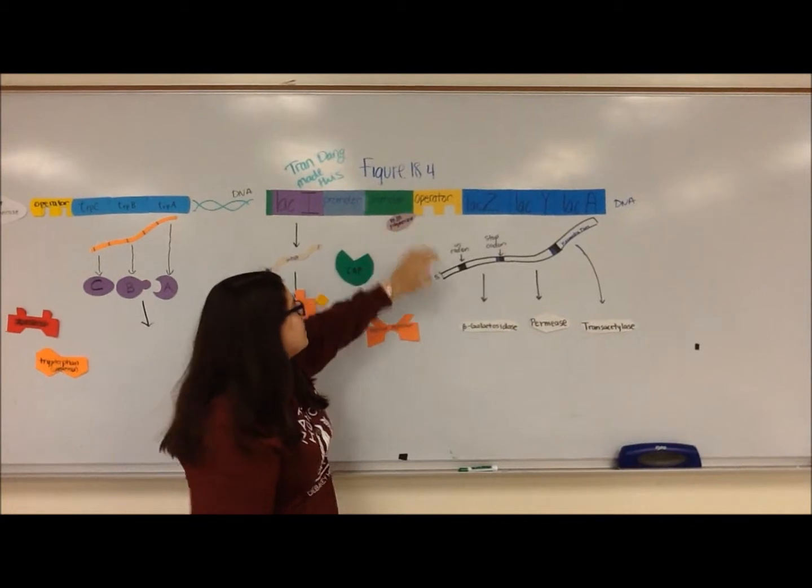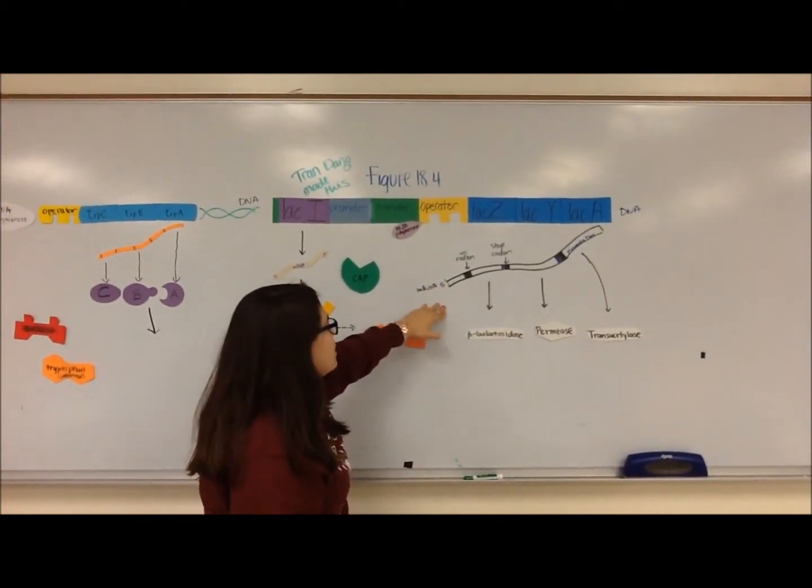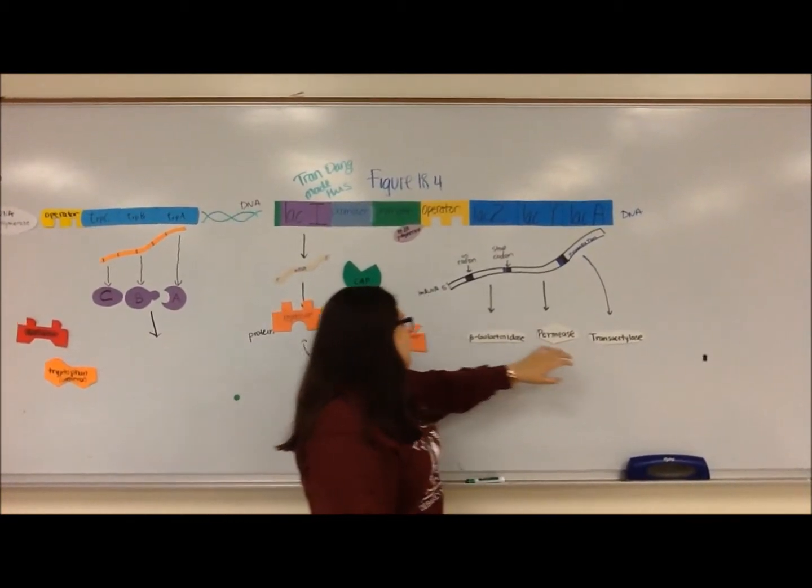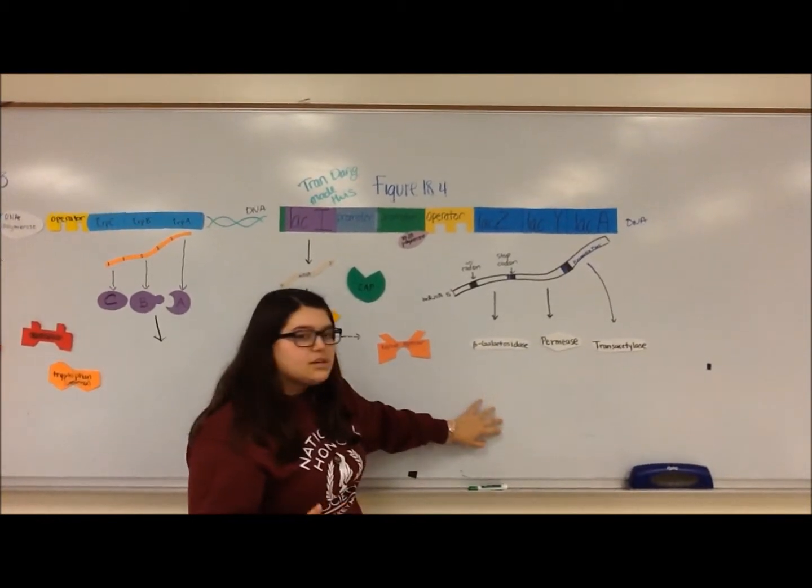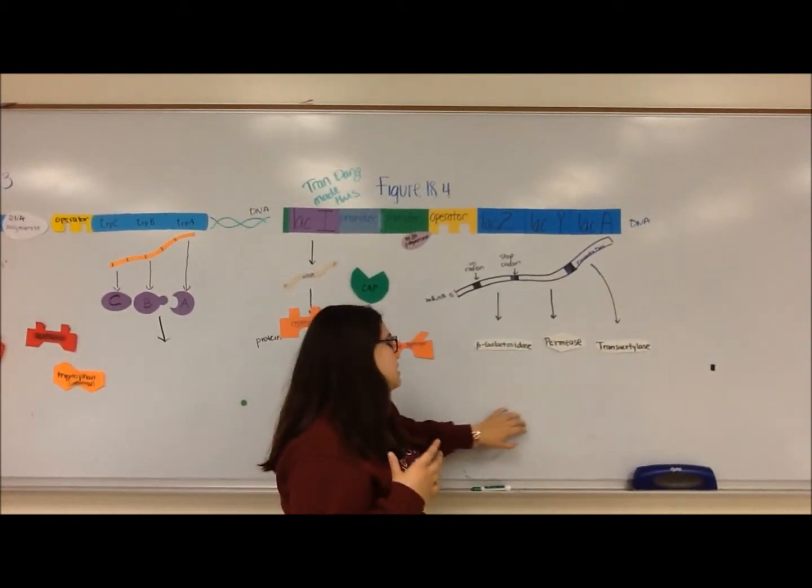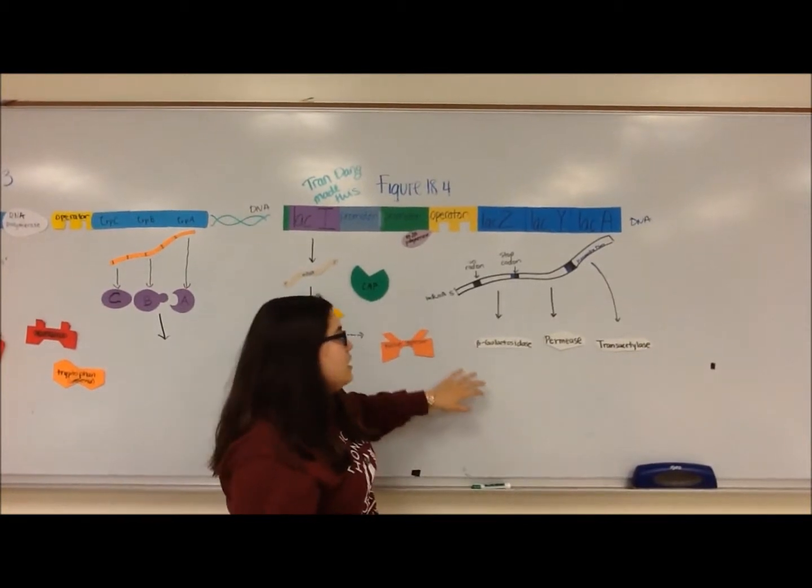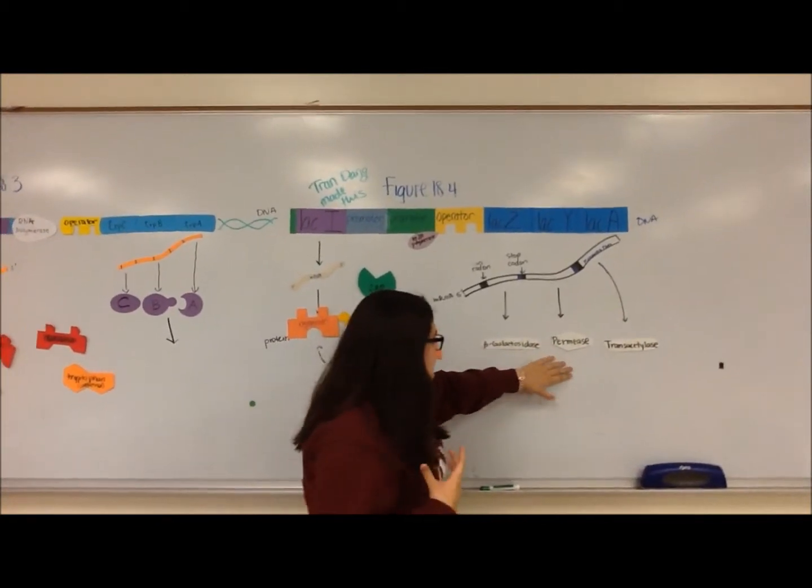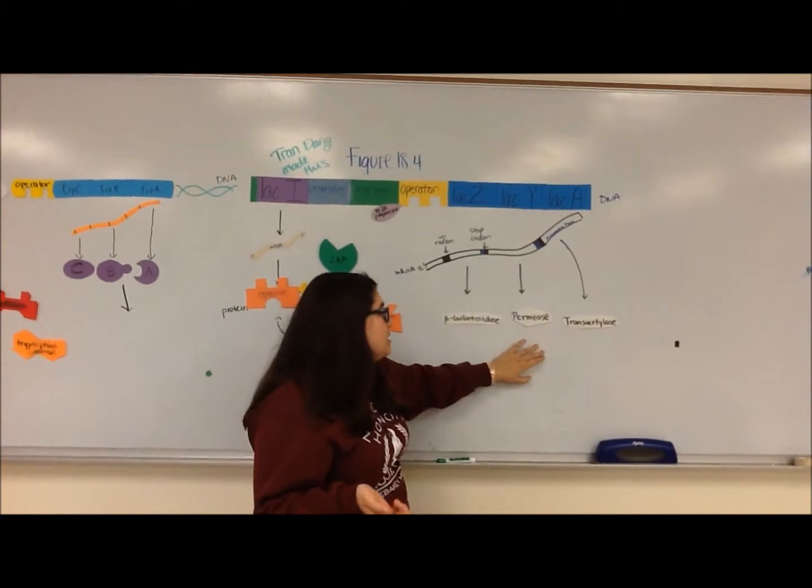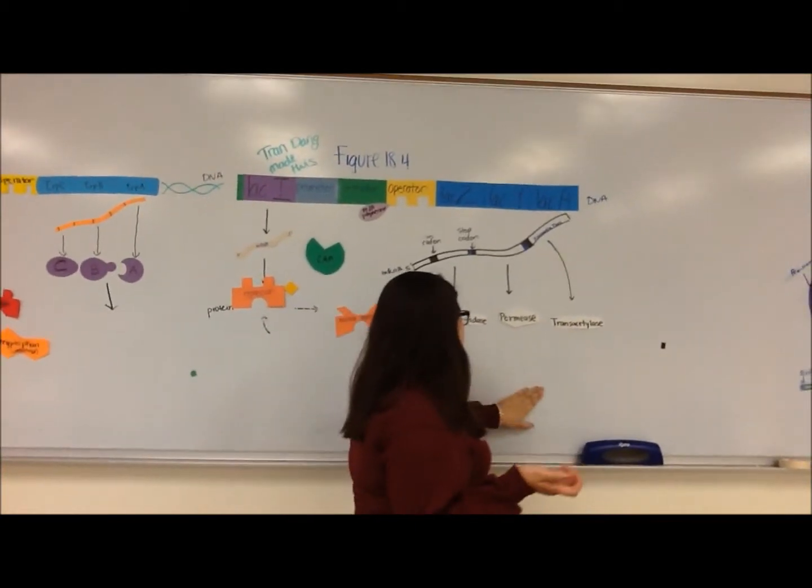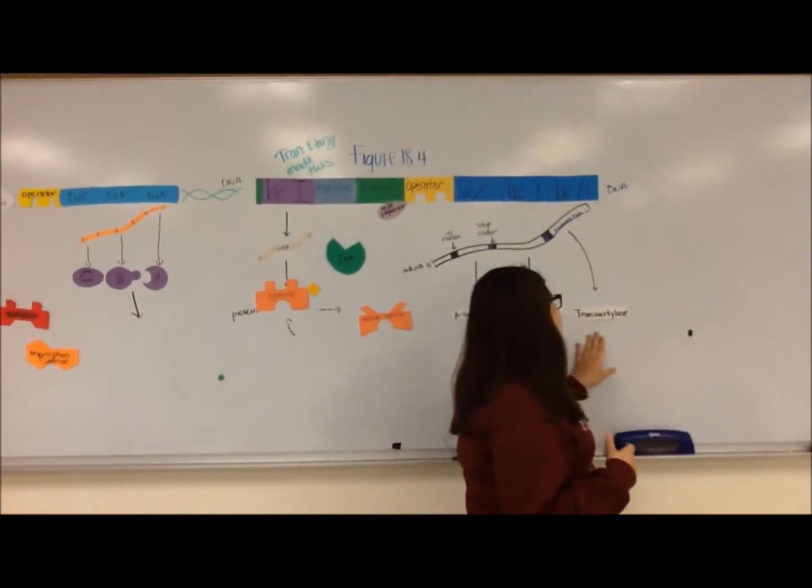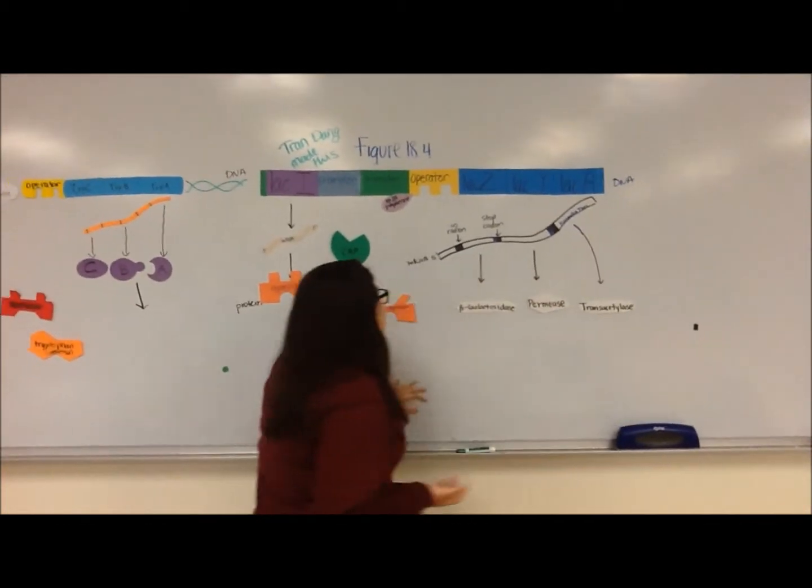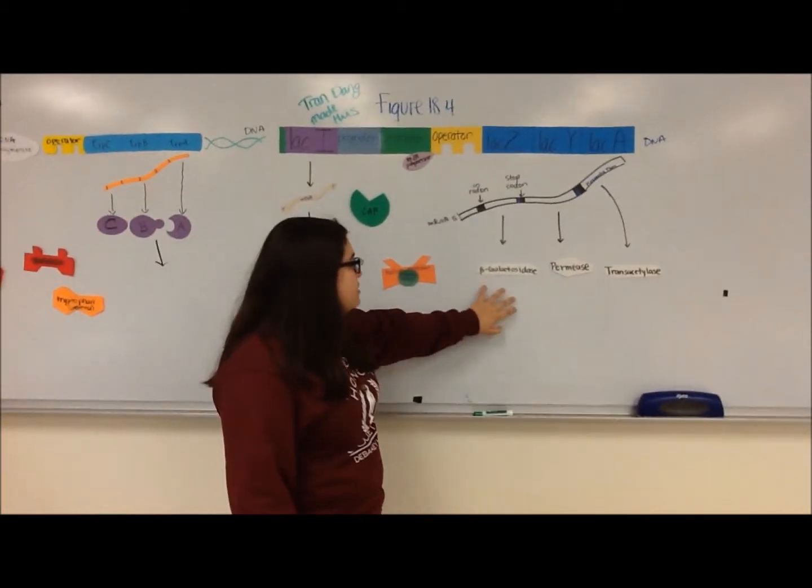The transcription of these genes makes mRNA that codes for three enzymes. Beta-galactosidase hydrolyzes lactose into galactose and glucose, permease is a membrane protein that allows lactose to enter the cell, and the function of transacetylase is unknown. These three enzymes metabolize lactose.